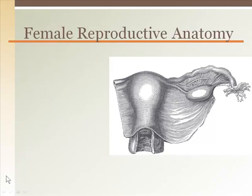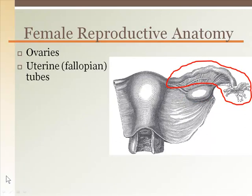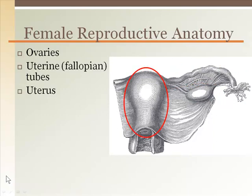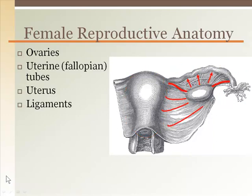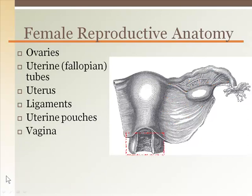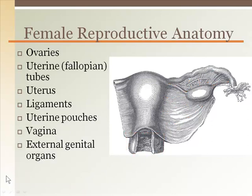The main anatomical features of the female reproductive system are two ovaries — only one is seen in this image — two fallopian or uterine tubes, a single uterus, a number of ligaments that suspend the uterus, fallopian tubes, and ovaries in the pelvis, uterine pouches that are formed from the ligaments and the uterus, the vagina, external genital organs, and accessory glands.